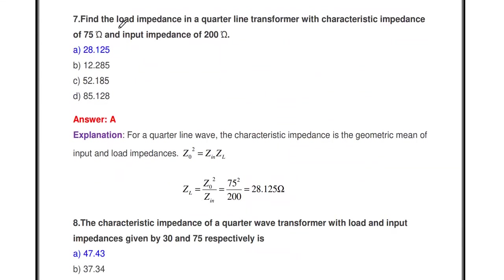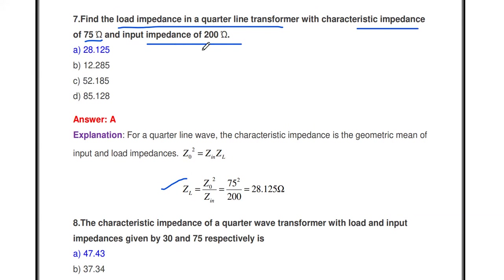Find the load impedance in a quarter wave transformer with characteristic impedance 75 ohms and input impedance 200 ohms. We need to find ZL. From the formula Z₀² = Zin × ZL, rearranging gives ZL = Z₀² / Zin = 75² / 200 = 5625 / 200 = 28.125 ohms. This is the load impedance of that quarter wave transformer.